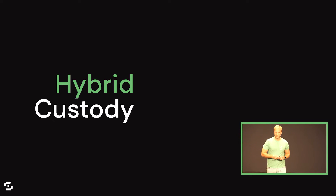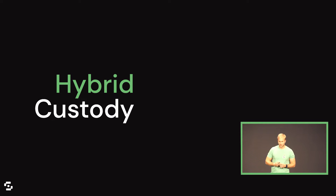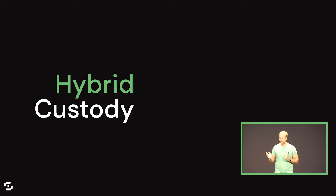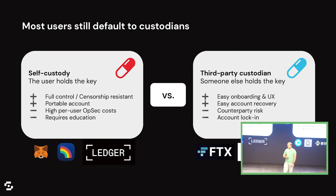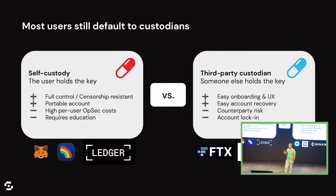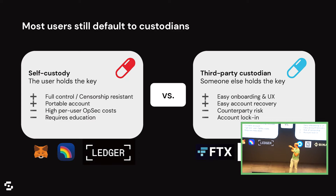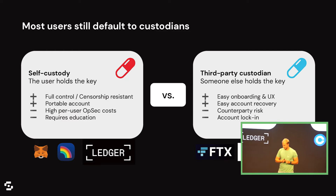Let's zoom in on one specific use case of account abstraction or smart contract accounts, and that's hybrid custody. This is something that's more future-looking — we may see these things popping up in two to five years — but it's personally something I find very interesting and it's going to be very impactful. The problem goes back to the dichotomy we have today, because all the wallets are these EOAs, these externally owned accounts.